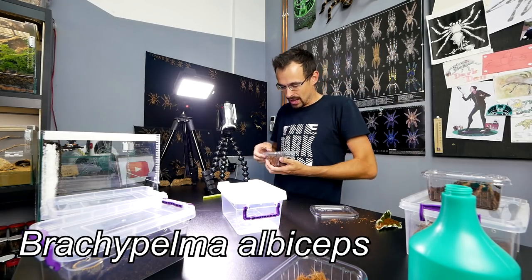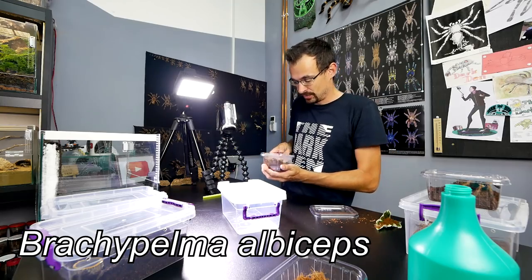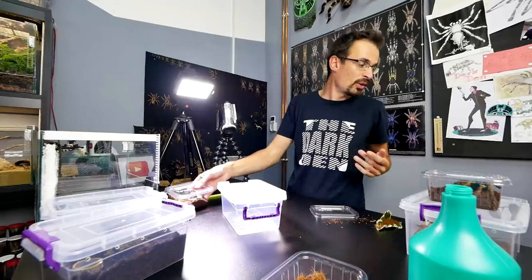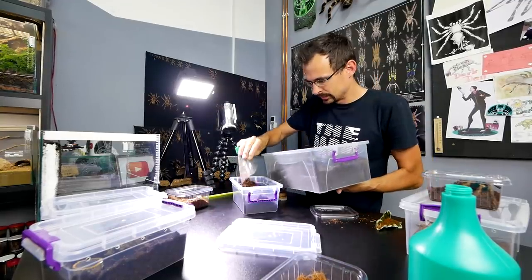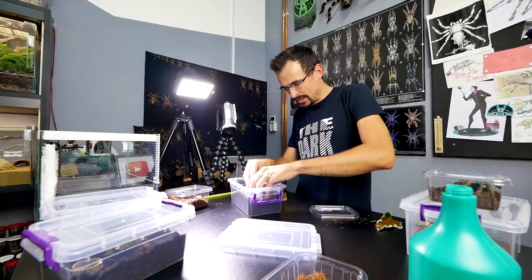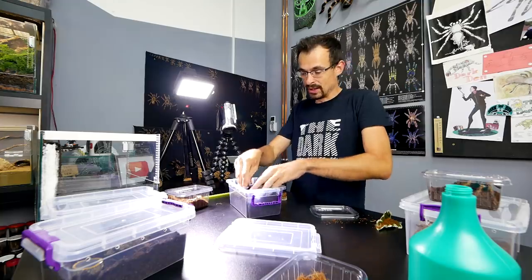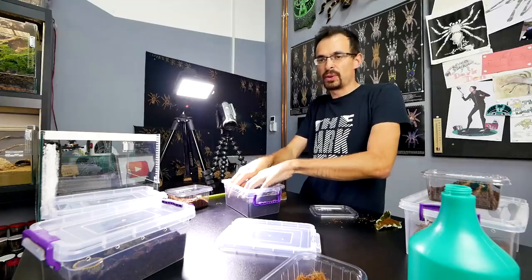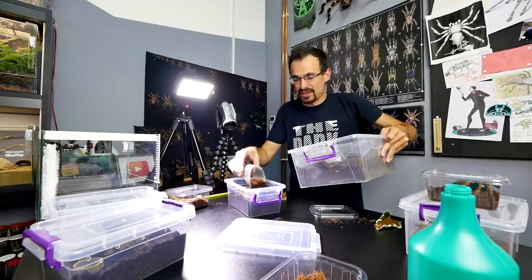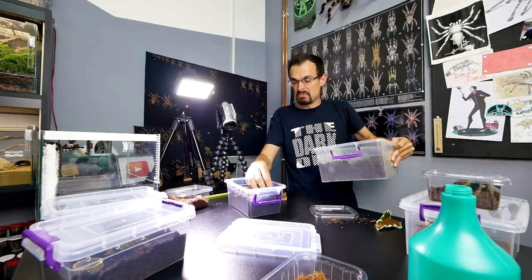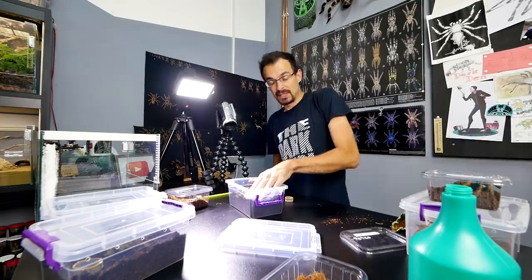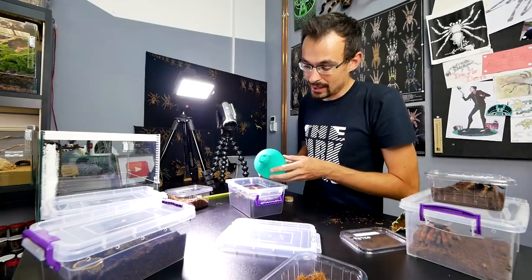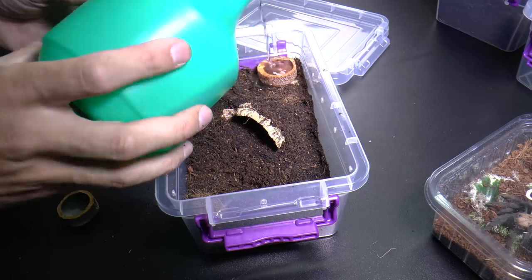Next one is Brachypelma Albiceps. She was also featured in that feeding video. She is a bit bigger. You see? A bit bigger. So for her also same thing - substrate, cork bark for hide. And you don't really need to make a hide immediately. The tarantula can dig and just make like a starting point and she will figure out that she can dig under it. Usually they figure that stuff out. But if your tarantula is not digging, that's also alright. It really depends. Some of my tarantulas never dig. They just hang out outside. That's even better because you can see it all the time, unlike when it digs and just disappears for months.